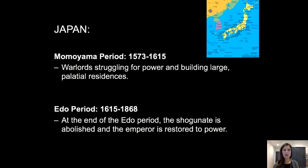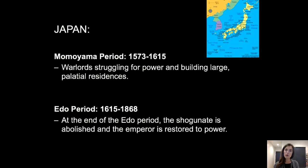The Momoyama period runs from 1573 to 1615, a time of warlords struggling for power and building large palatial residences. Then briefly the Edo period runs from 1615 to 1868. At the end of the Edo period, the shogunate is abolished and the emperor is restored to power — so it takes all the way to 1868 for this restoration to occur.